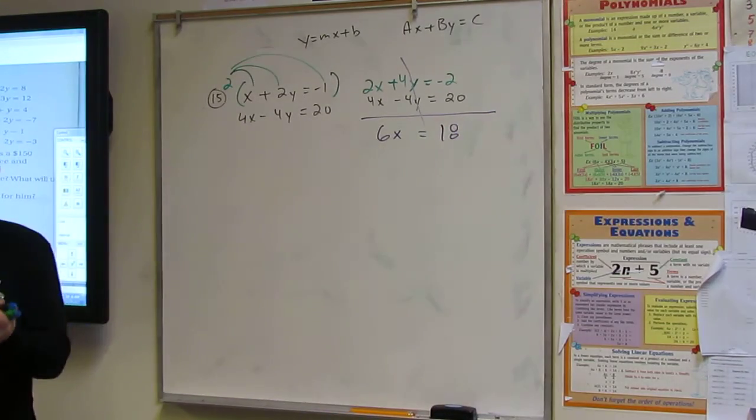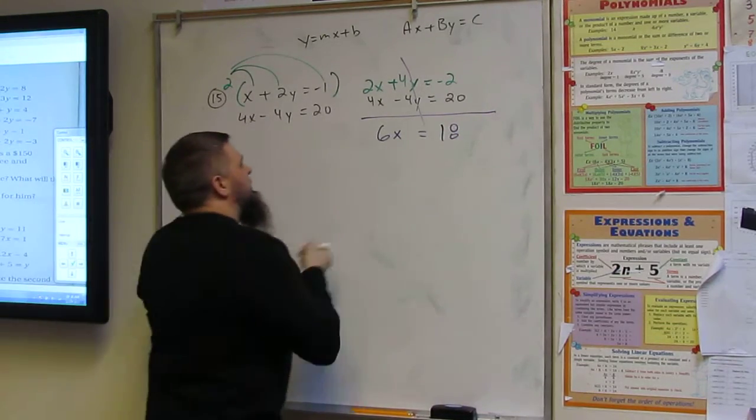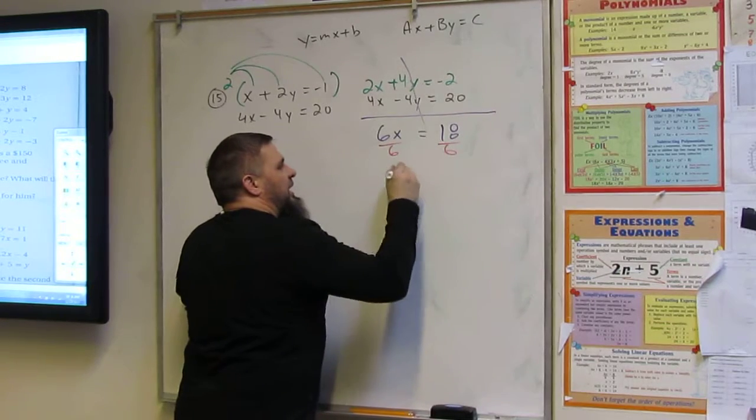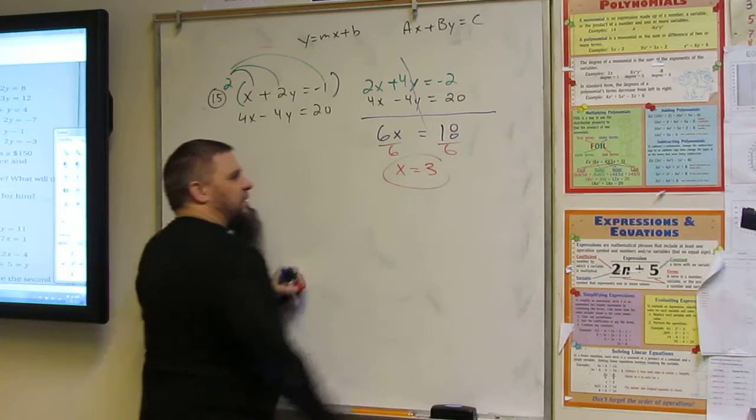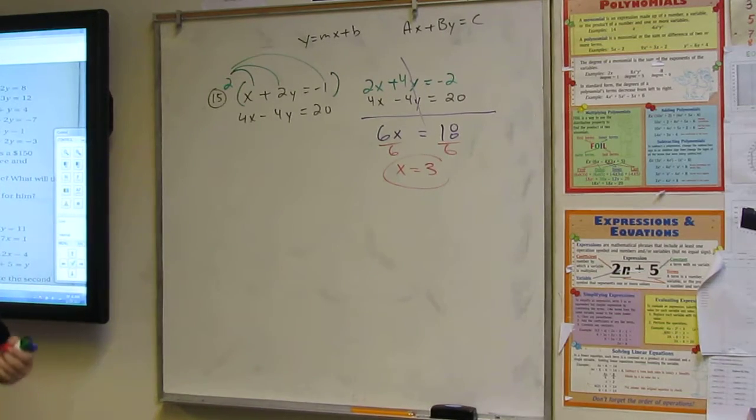All right. Now what do we do? Divide by six. What do we get? Three. Perfect. There it is.